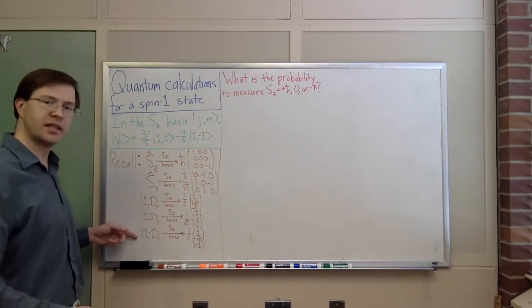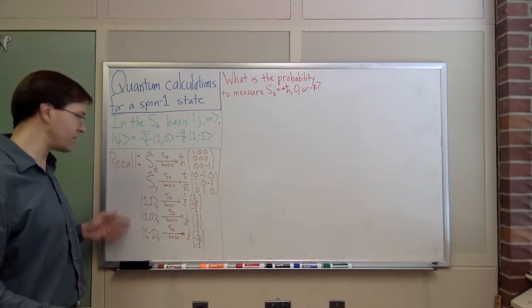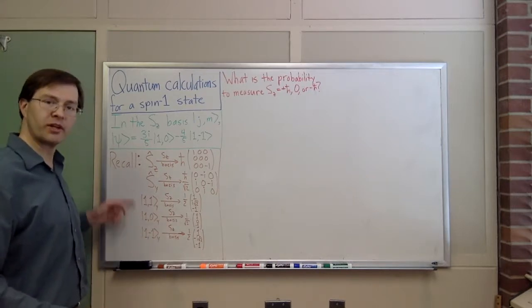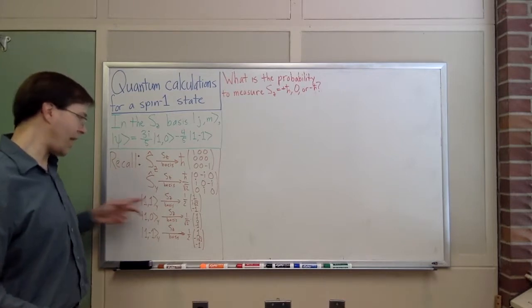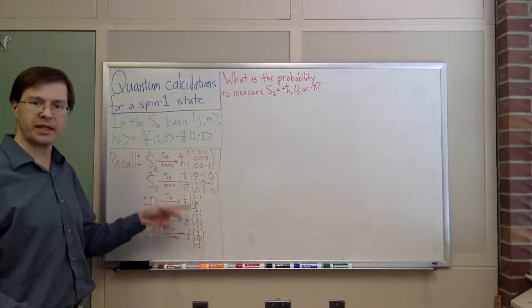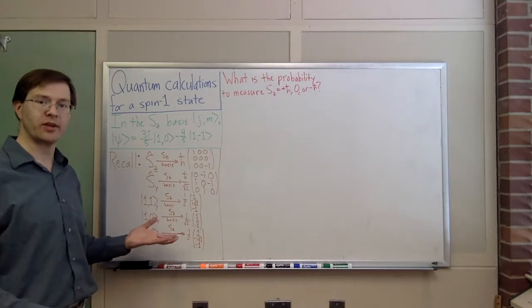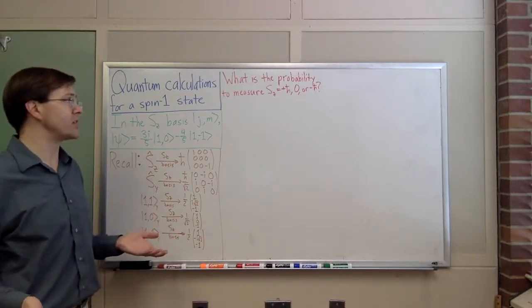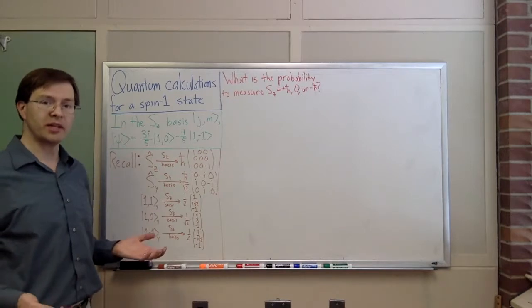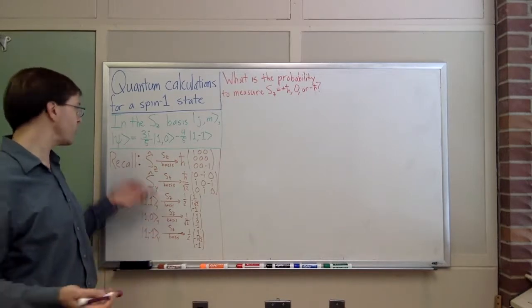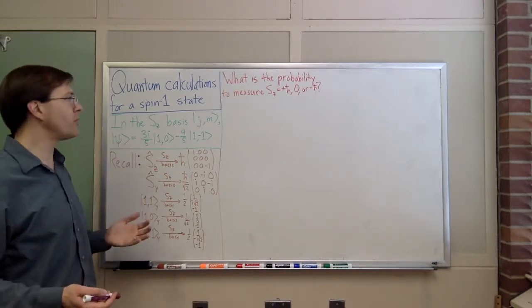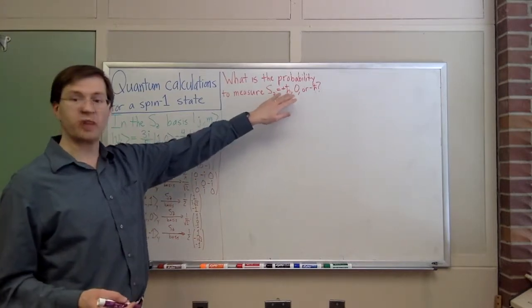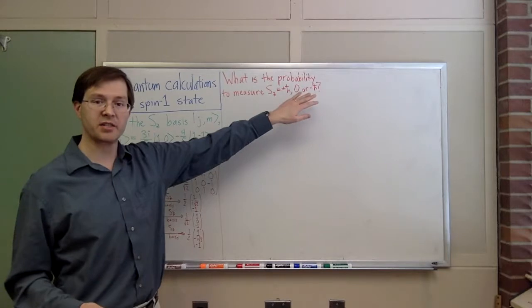Down here I have the z-basis state representations of the y-component of angular momentum eigenstates. The |1,1,y⟩ is a combination of the three z-eigenstates written as a column vector. So that's just for reference. To start with, though, I want to ask a simpler question: what's the probability, if I have a particle in state psi, that I'll measure it having z-component of angular momentum equal to +ℏ, or 0, or -ℏ? We'll start with plus.